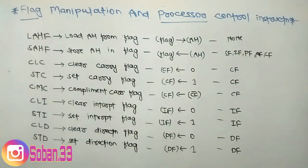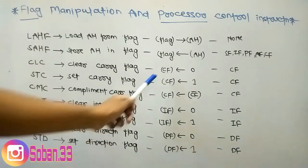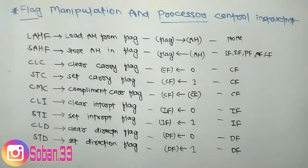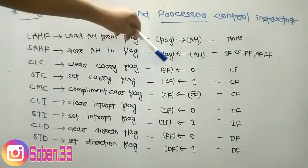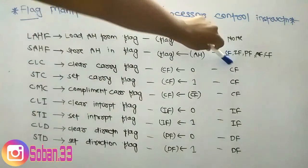CLC means Clear Carry Flag. That means we insert zero into the carry flag — the value of the carry flag is set to zero. Since we are working on the carry flag, it will obviously be the affected flag.